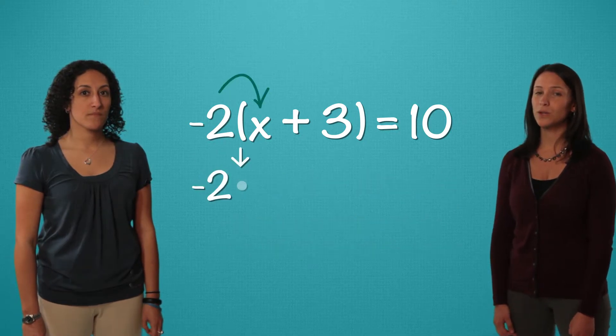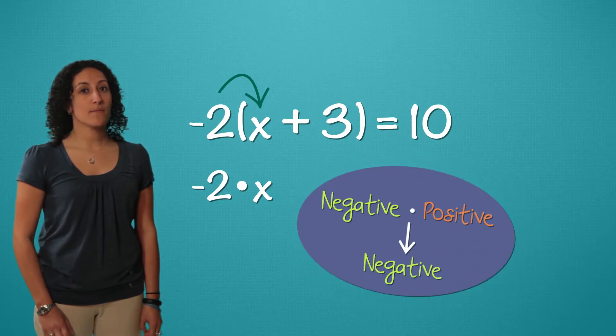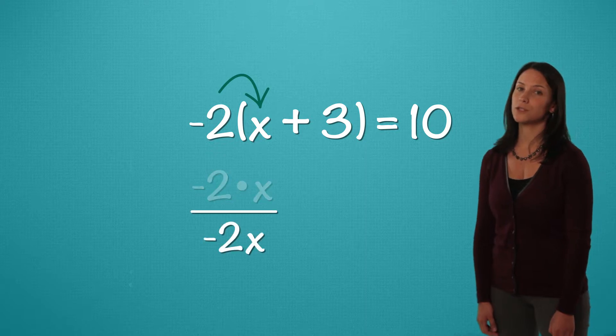We first multiply the negative 2 and the x. Remember to watch the signs. A negative times a positive makes a negative. So negative 2 times x equals negative 2x.